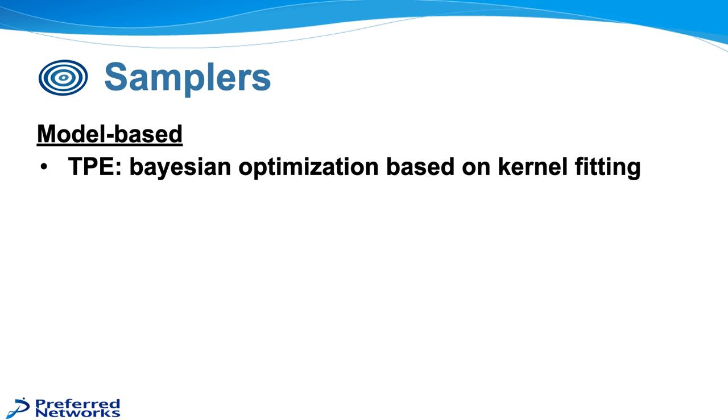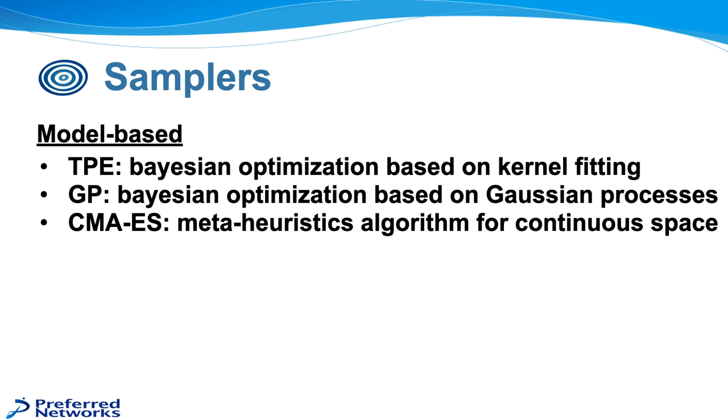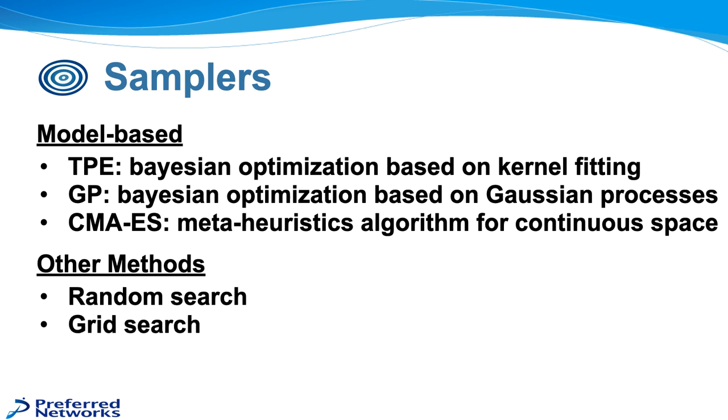So for samplers, there are a number of different kinds of samplers that can be used with Optuna. The model-based samplers that we have available include TPE, Tree Structured Parzen Estimator, which is based on kernel fitting. Also Gaussian Processes, which is also another Bayesian optimization. And also Covariant Matrix Adaptation Evolutionary Strategy, CMAES, which is a meta-heuristics algorithm for continuous space. And there are other choices. If you're required to do a random search, it can also be done where it's just purely random to fully explore all of the space equally. Or also grid search is something that can also be used. And if you want to do something else or have a different style of sampling, there's also the facilities within Optuna to do a user-defined algorithm as well.